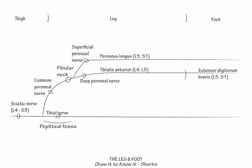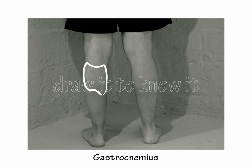Lastly, let's show two key tibial nerve innervated muscles. First indicate the gastrocnemius, S1 and S2, which provides foot plantar flexion.